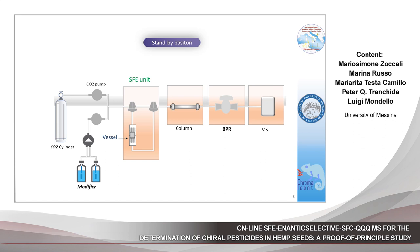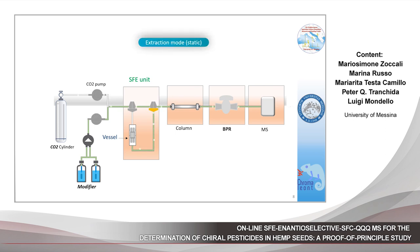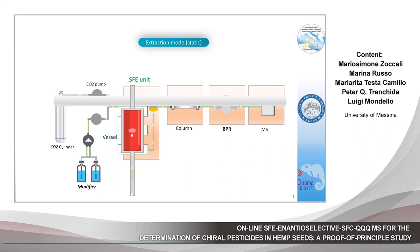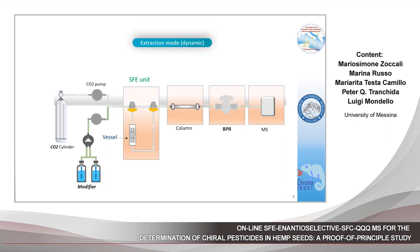The animation shows how the instrument works. During the standby position, both the CO2 pump and the modifier pump flow through the analytical column, the back pressure regulator, and are finally directed to the MS without any split. During the extraction mode — called static extraction — by switching the first valve, it is possible to divert the flow from the CO2 pump and modifier pump in order to fill the extraction vessel. The extraction vessel can also be heated up to 70°C to improve extraction efficiency. At the end of the static extraction mode, by switching the valve again, it is possible to transfer the extracted analytes from the extraction vessel into the analytical column.